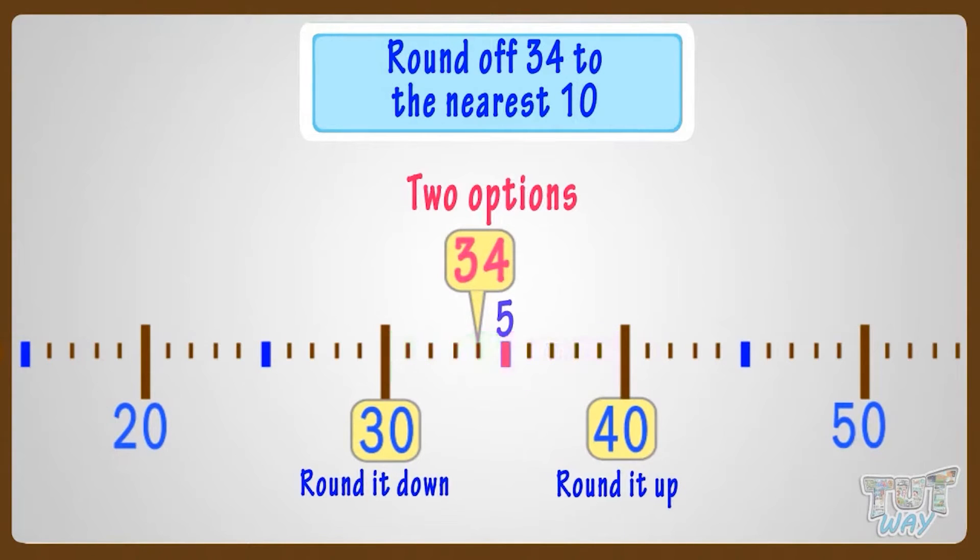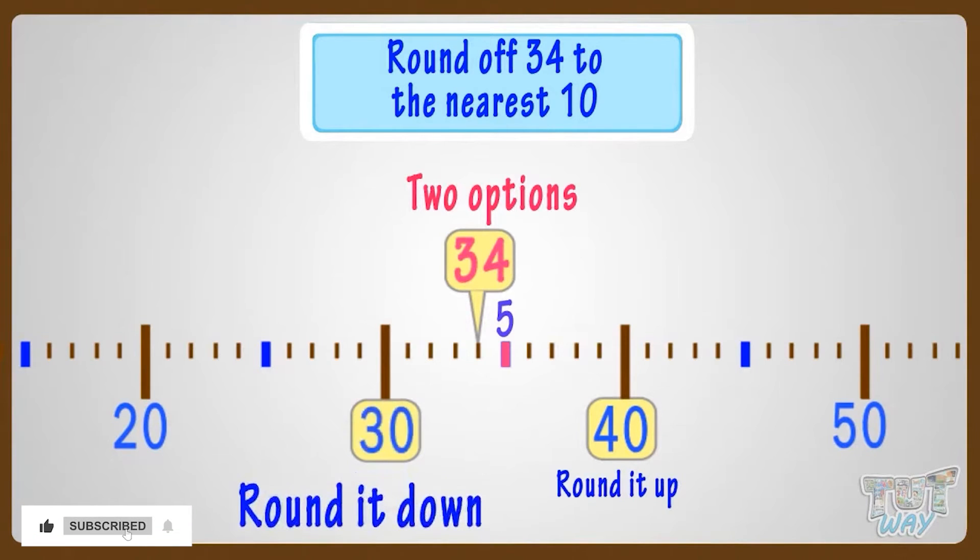Here, 34 is below the 5 mark. So we will round it down to 30. Good.